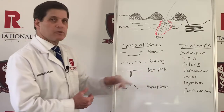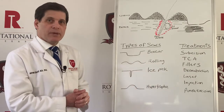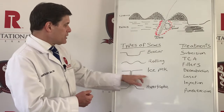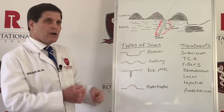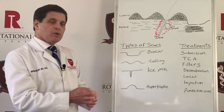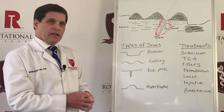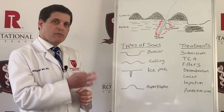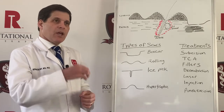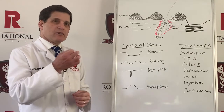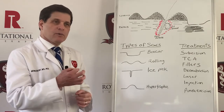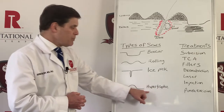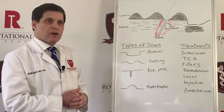Another type of scar is called the ice pick scar. Ice pick scars are deep holes in the skin. They don't have to be very big — they can be very small and they look like enlarged pores almost.